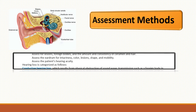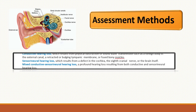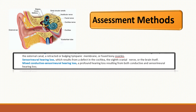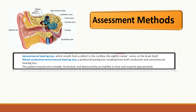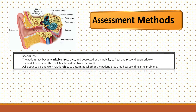When you talk about hearing loss, it's important to review the following. Hearing loss is categorized three ways. The first is conductive hearing loss, which results from physical obstruction of sound wave transmission, such as a foreign body in the external canal, a retracted or bulging tympanic membrane, or fused bony ossicles. We also have sensorineural hearing loss, which is from a defect in the cochlea, the eighth cranial nerve, or the brain itself. Mixed conductive-sensorineural hearing loss is a profound hearing loss coming from both types. The patient may become irritable, frustrated, and depressed because they can't hear well, and they may isolate themselves. You want to ask about their social and work relationships to determine if they're isolating themselves because of hearing loss.